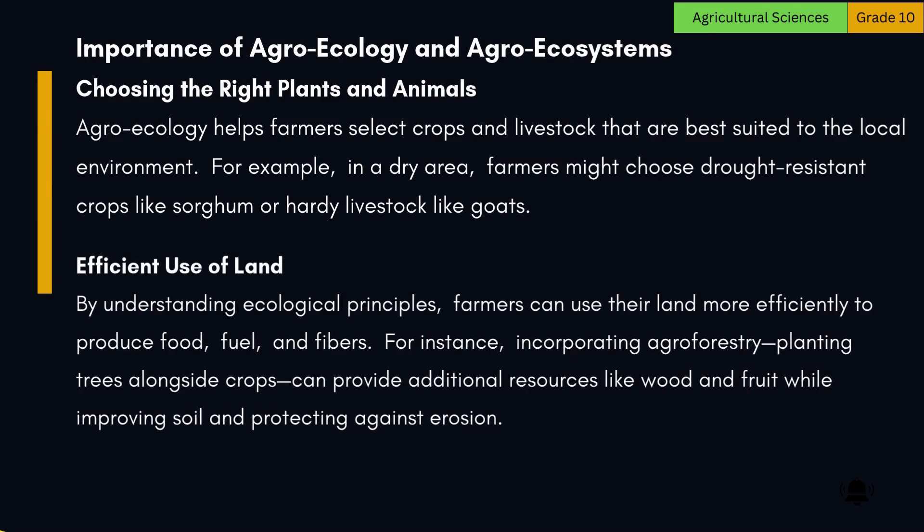Efficient use of land: By understanding ecological principles, farmers can use their land more efficiently to produce food, fuel, and fibers. For instance, incorporating agroforestry — planting trees alongside crops — can provide additional resources like wood and fruit while improving soil and protecting against erosion.